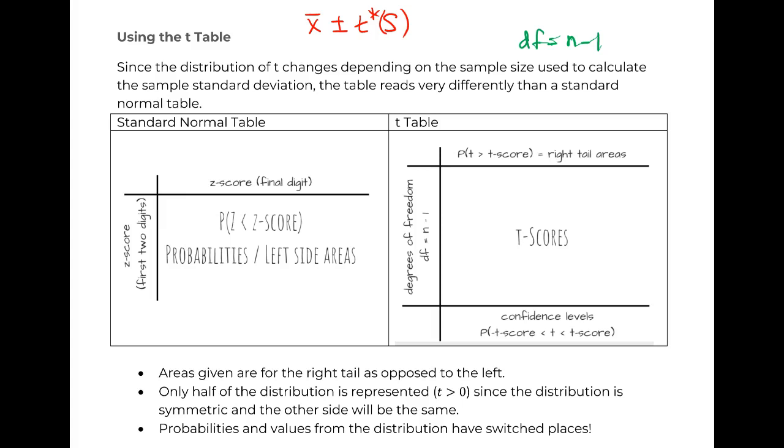So setup of the table, standard normal: all your z scores are on the outside, and you've got your probabilities in the middle. T scores are set up differently. They have probabilities along the top, confidence levels along the bottom, and then you have your degrees of freedom, where all your t scores are actually in the middle. So setup exactly opposite of our normal distribution.